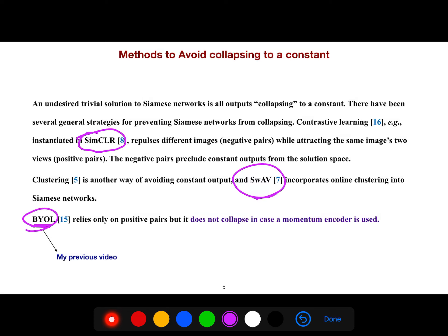BYOL relies only on positive pairs, just like this paper, as it only cares about positive pairs, but it does not collapse in case a momentum encoder is used.